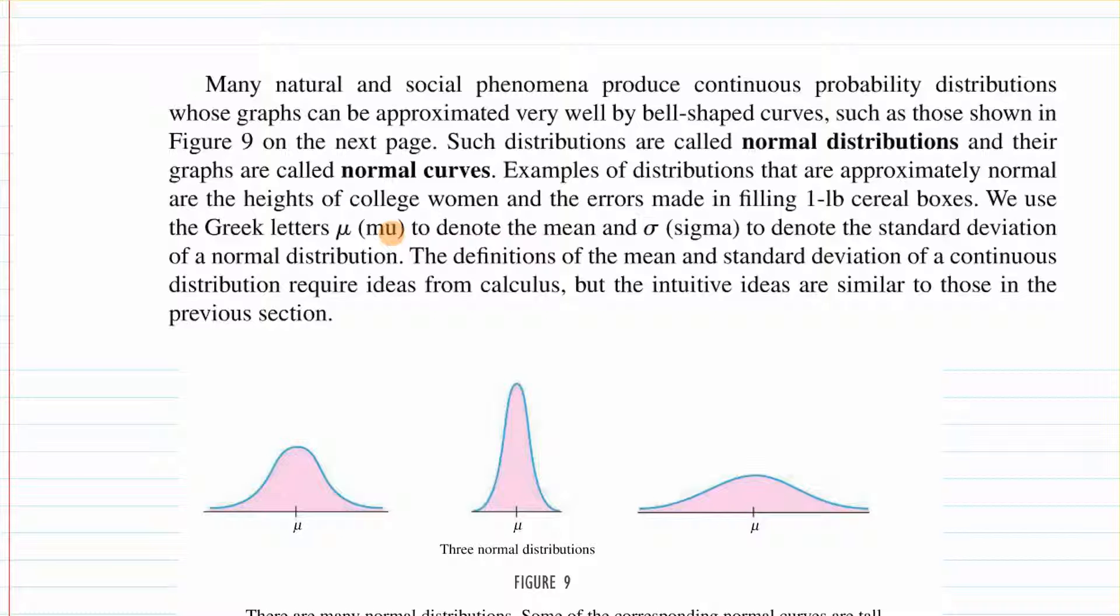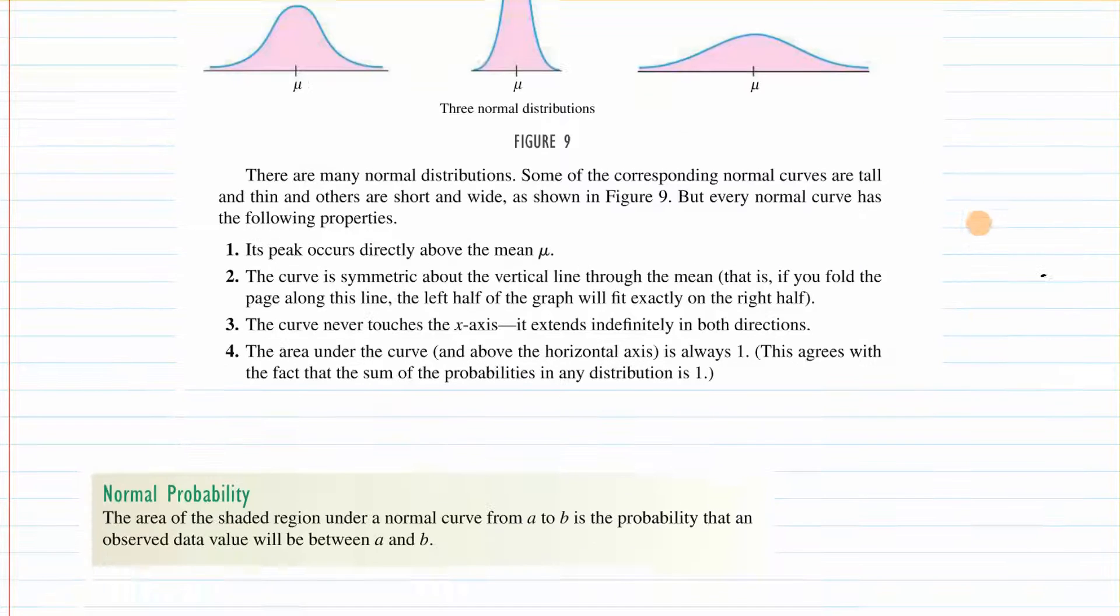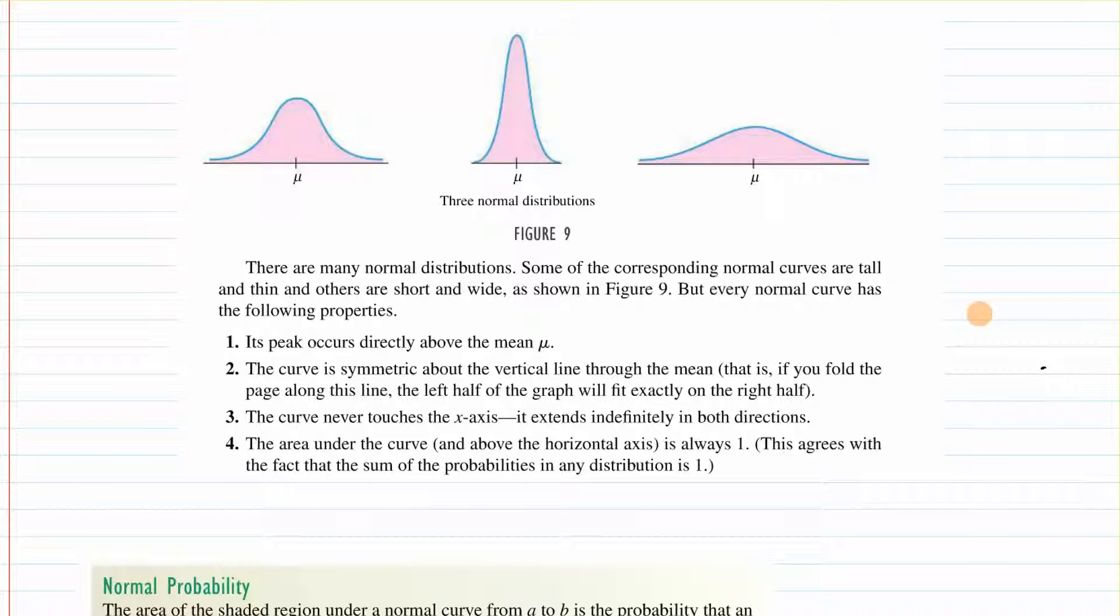The distributions of the mean and standard deviation of a continuous distribution require ideas from calculus, but the intuitive ideas are similar to those in the previous section. So we're just going to touch on it. A bell curve or normal curve can be tall and thin or short and wide, but they have the same properties.